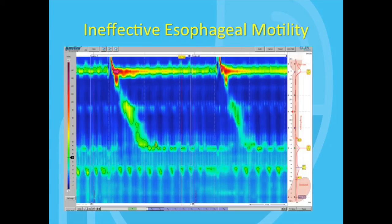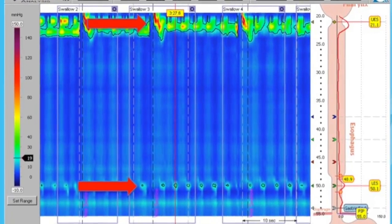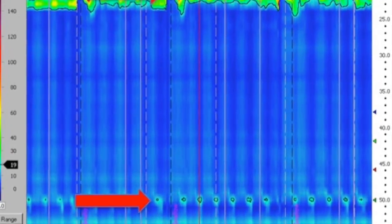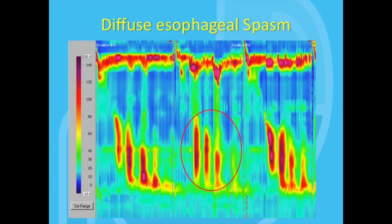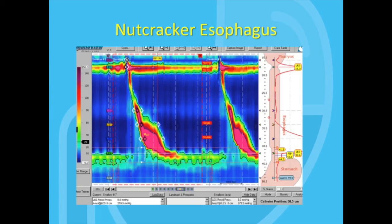In this slide, we see ineffective esophageal motility where the peristaltic contractions are very weak and of low amplitude. Sometimes we use the term scleroderma-type esophagus when this ineffective esophageal motility is particularly severe. Here's an example of esophageal spasm — a simultaneous contraction in the distal esophagus — which is often associated with perceived pain by the patient. In this slide, we see an example of nutcracker esophagus, where the peristaltic amplitude in response to swallows is quite high, in this case more than 300 millimeters of mercury. These patients often present with either dysphagia or chest pain.